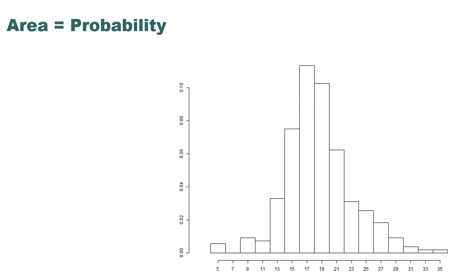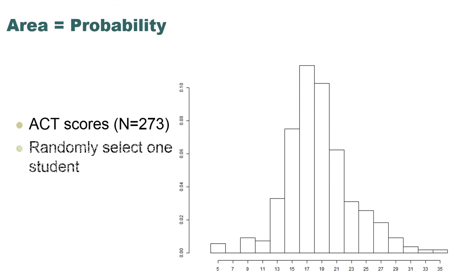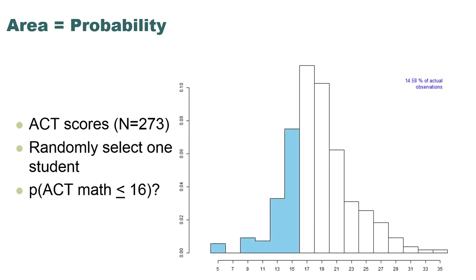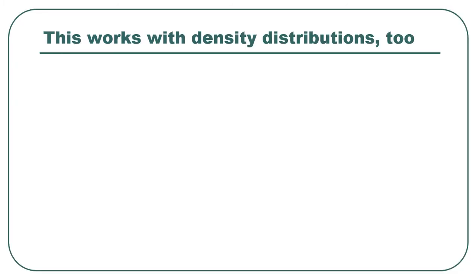You can do this with numerical data as well, but with numerical data we talk about ranges of data. These are ACT math scores of university students. If you were to randomly select one student, what's the probability of selecting a student with an ACT math score less than or equal to 16? The probability is all the area of the graph up to the point of 16 — it turns out to be 14.58% of observations, so the probability is about 0.146. The area of the graph is the proportion of observations, and the proportion of observations is a probability.